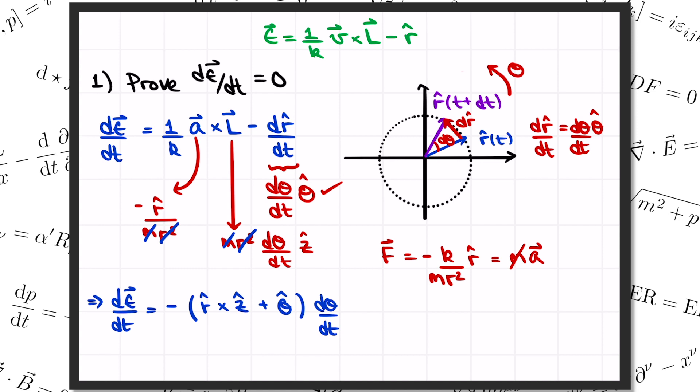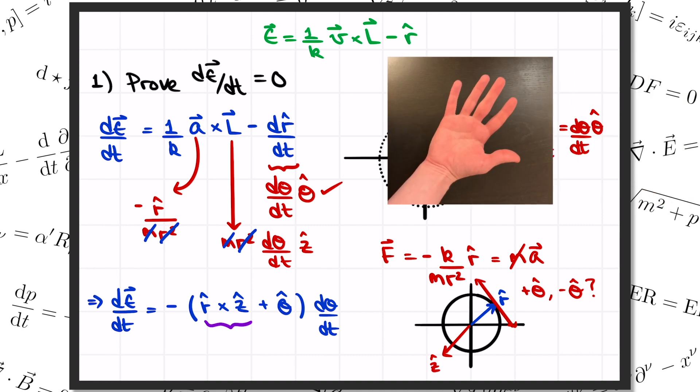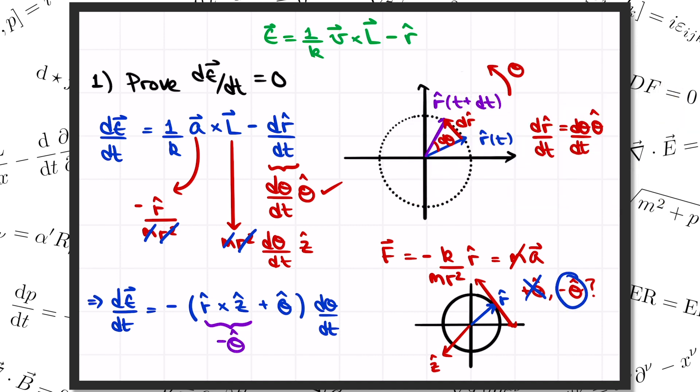So the very last thing we need to do here is figure out what's going on with this r hat cross z hat. Remember that the cross product is perpendicular to the two vectors that you started with. Well, since it has to be perpendicular to z, that means that this cross product is going to lie in the xy plane. And then if it's perpendicular to r hat, that means it points along the theta hat direction. But is it equal to plus theta hat or minus theta hat? The answer comes from the definition of the cross product. It's called the right hand rule. You point your fingers along the direction of the first vector, r hat in this case, and then curl them toward the second vector, z hat. Your thumb will then point along the direction of the cross product, which in this case is pointing clockwise. So that means that r hat cross z hat is equal to minus theta hat. So we indeed find that d epsilon by dt is equal to zero. The Runge-Lenz vector is indeed a constant.